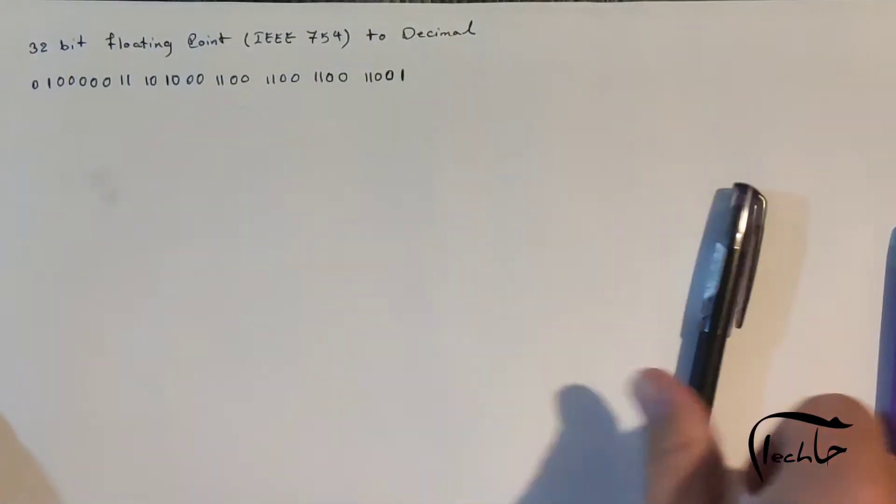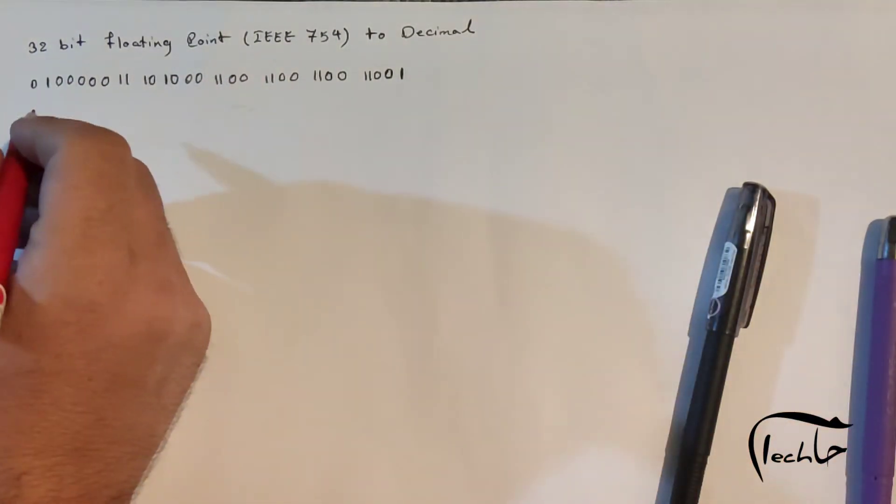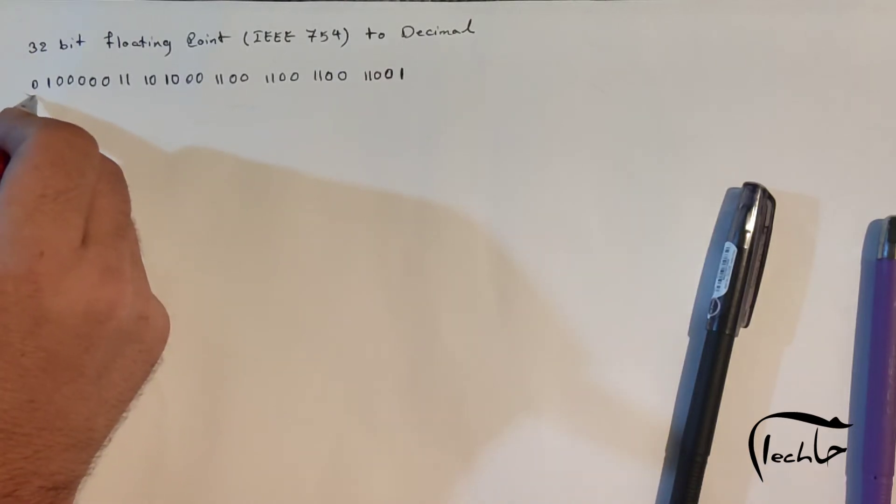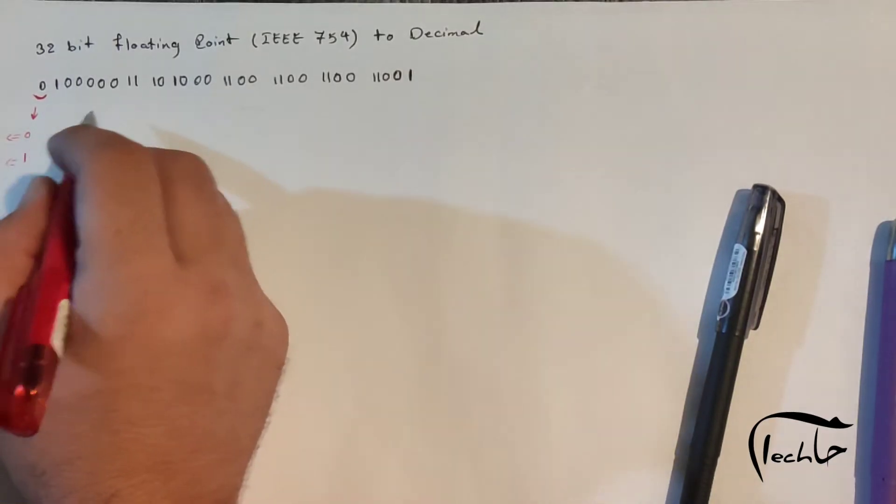In this format, the first bit is the sign bit. Zero for positive and one for negative. So in this example we have a positive number.